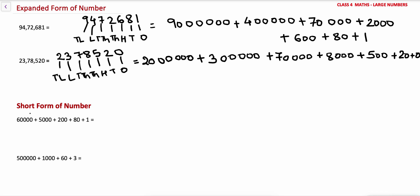Now let's see the short form of a number. For writing a number in short form, we need to check the positions of all the individual numbers. So this is at ones, tens, hundreds, thousands, 10,000 — so this is 60,000. And this is 5,000. And 200 is at the hundreds place, 80 is at tens place, and 1 is at ones place. So the short form of this number is 65,281.